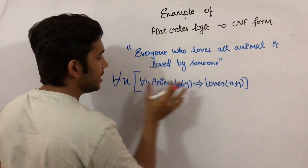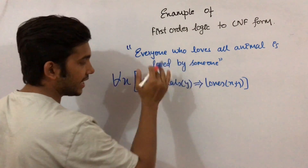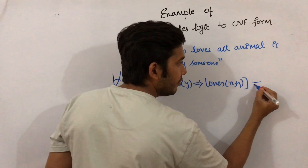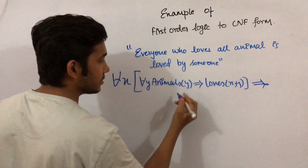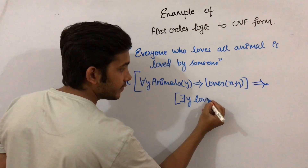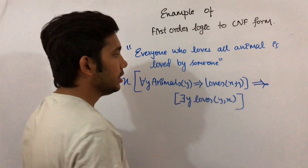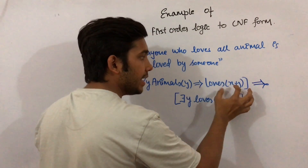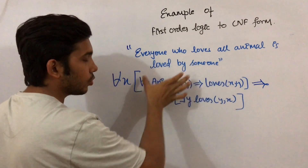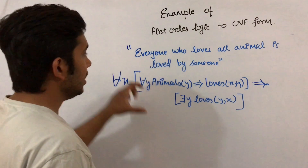In the second part, 'loved by someone' — we can write: there exists someone who loves X. In this part, whoever loves all animals is loved by someone. So this was the conversion of the statement into predicate logic.